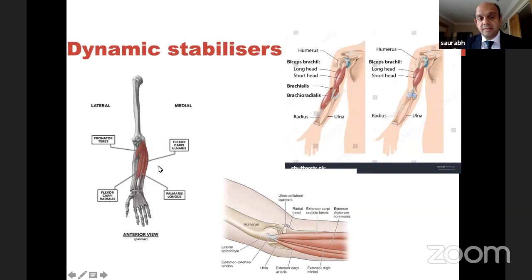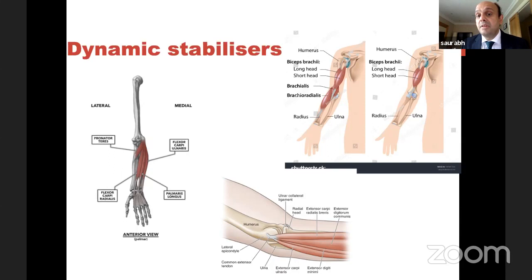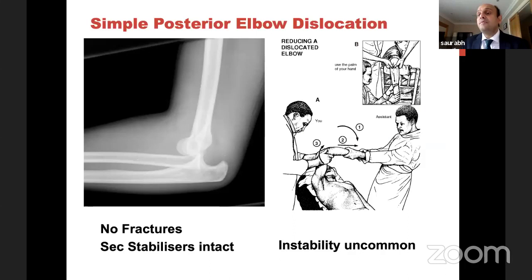Then there are the dynamic stabilizers: four flexors — pronator teres, FCR, palmaris longus, FCU — and extensors: ECU, EDM, EDC, ECRB, and then biceps and brachialis. Remember biceps and brachialis are inserted in the front. When we come to the concept of dynamic congruity, brachialis sits onto the coronoid and biceps inserts onto the bicipital tuberosity — they are the flexors of the elbow, and biceps is also a supinator.